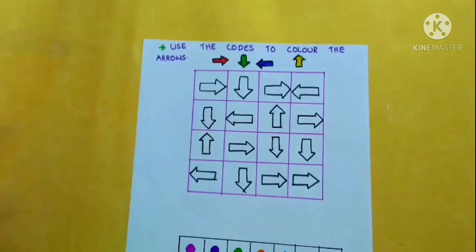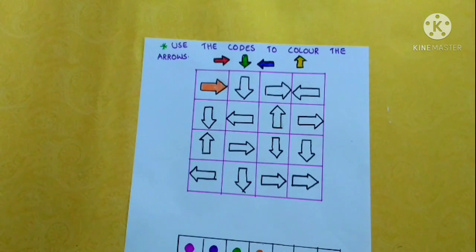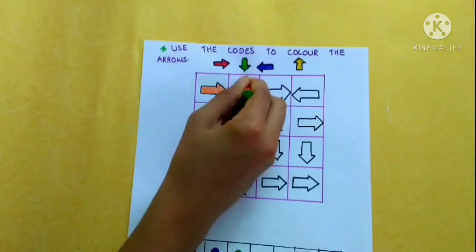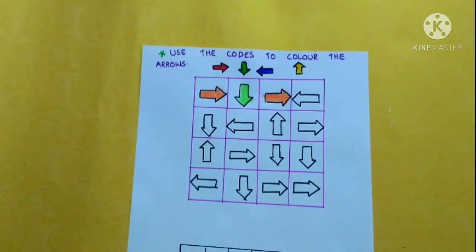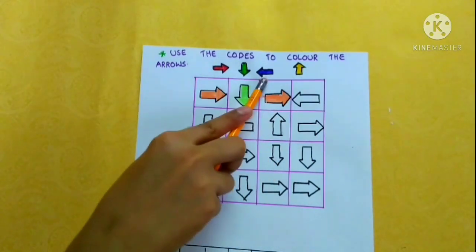Right arrow red, down arrow green, right arrow red, left arrow blue.